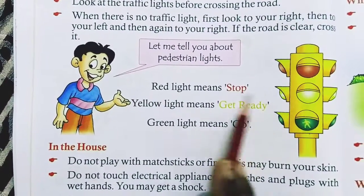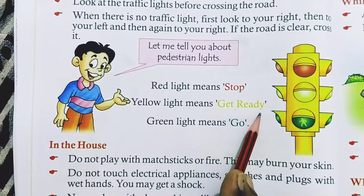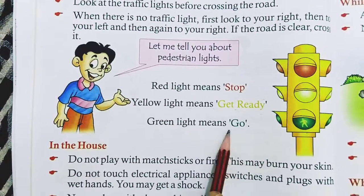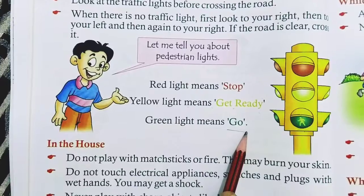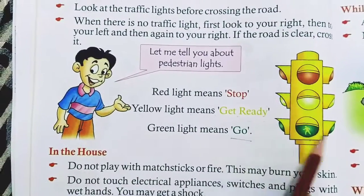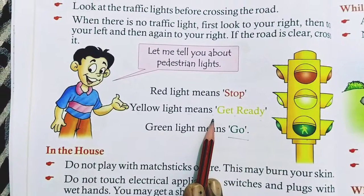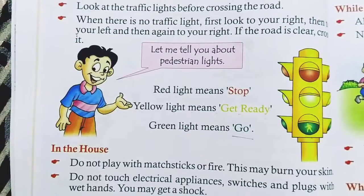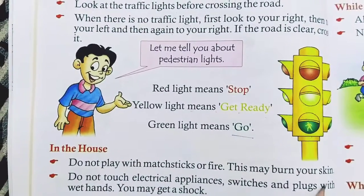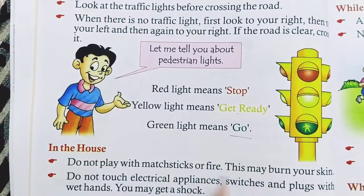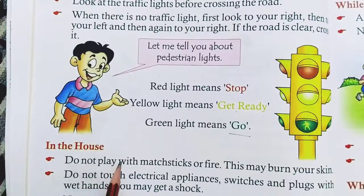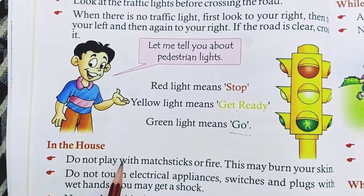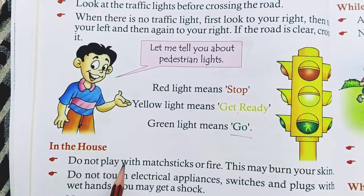Red light means stop. Yellow light means get ready to go. Green light means go. These were our safety rules. In our next video, we will talk about safety rules in our house. Have a great day — stay home, stay safe!